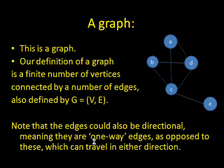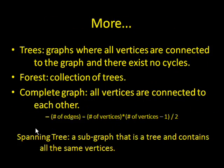A forest is a collection of trees. A complete graph is a graph such that every vertices is connected to every other vertices directly. A property of complete graphs is that the number of edges is equal to the number of vertices times the number of vertices subtract 1 divided by 2. And a spanning tree is a subgraph that is a tree that contains all the same vertices.